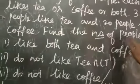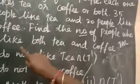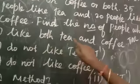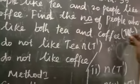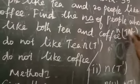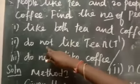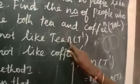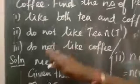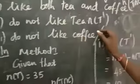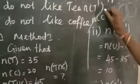Find the number of people who: first, like both tea and coffee — that means N of T intersection C; second, do not like tea — that means N of T dash; and third, do not like coffee — that means N of C dash.